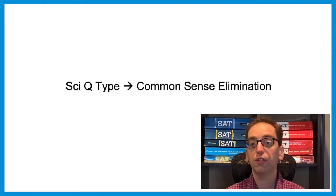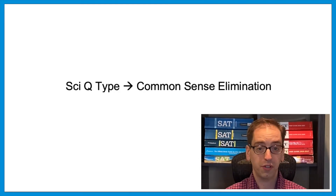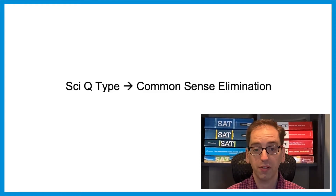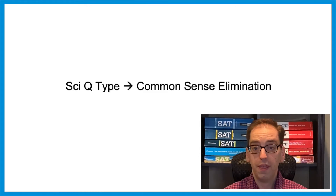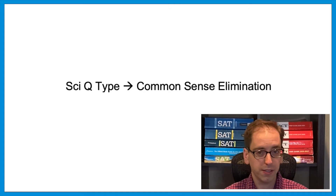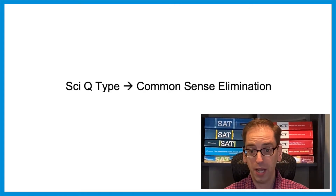In another type of science question, you can use what I call common sense elimination. For certain questions, two answers are simply illogical — you can often eliminate them just based on reasoning. For example, they might ask what happens to the mass of an object as it loses or gains material, and an answer choice might say as the object increases in mass, it loses material. That doesn't make sense. Common sense will often tell you that two answers are immediately out, getting you down to a one-out-of-two shot instead of one-out-of-four.